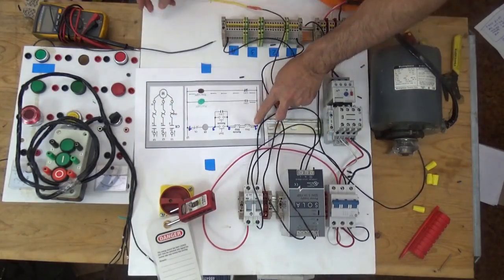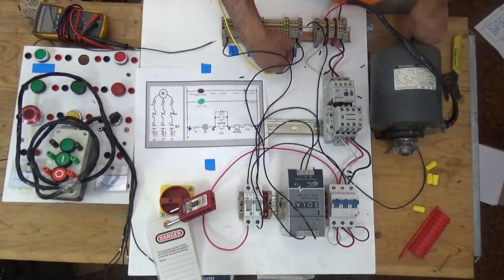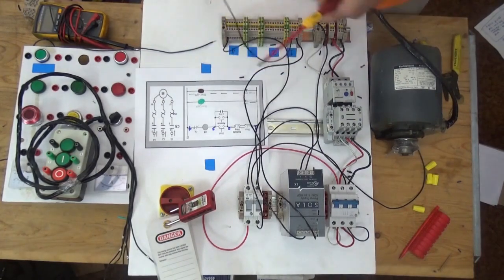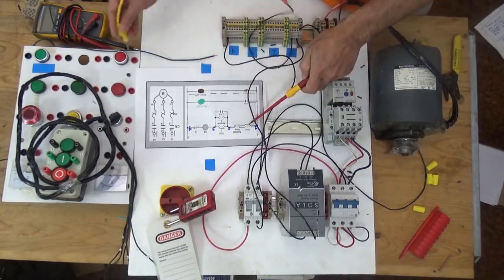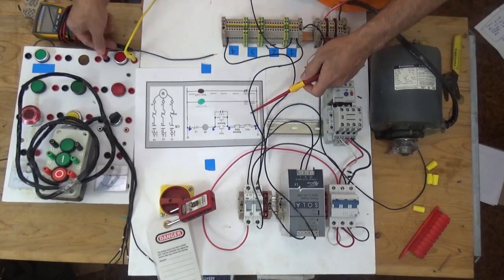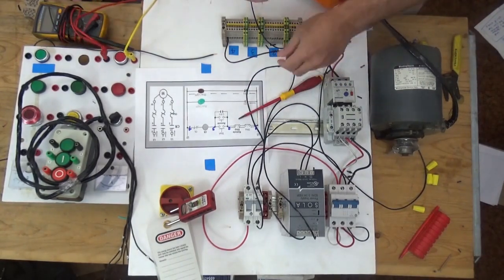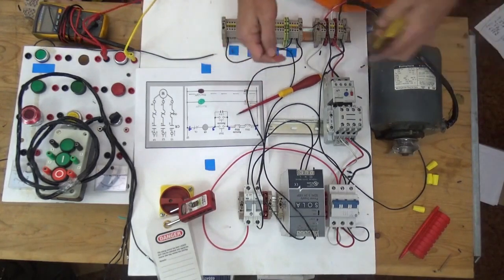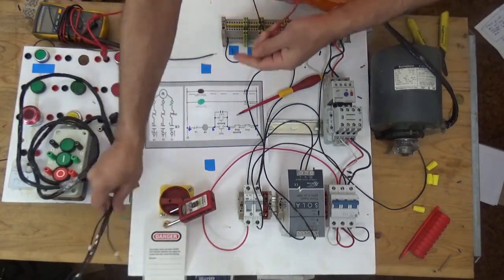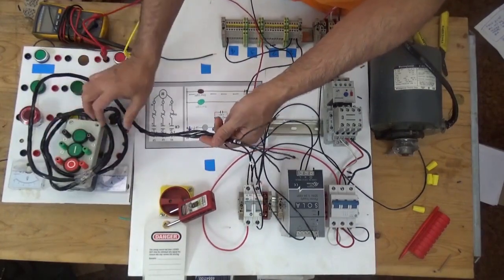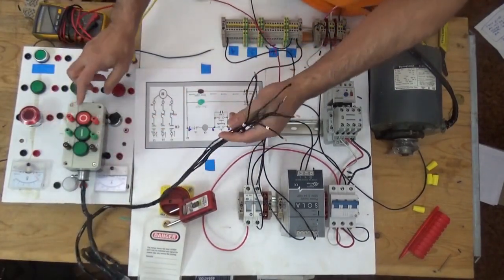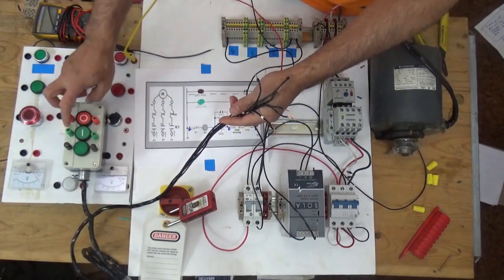So from line 1 here going to our stop push button here. Out of the stop push button going to the remote stop push button. The remote stop push button is here. I already wired for stop 1 and 2, for start 3 and 4.